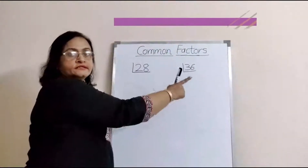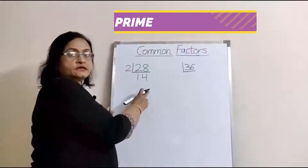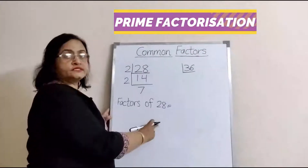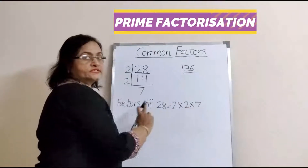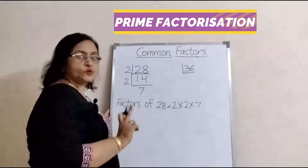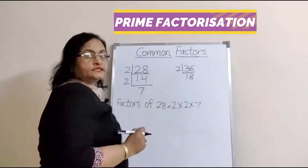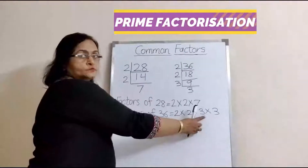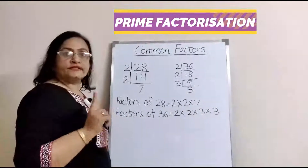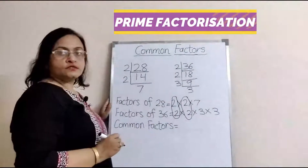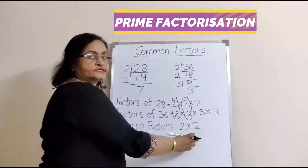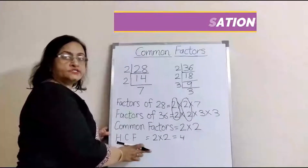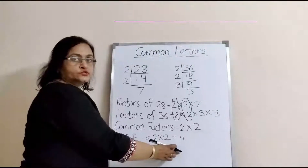Now we will find the HCF of 28 and 36 using the third method. For 28: 2 × 14, then 14 = 2 × 7. So factors of 28 are 2 × 2 × 7. For 36: 2 × 18, 18 = 2 × 9, 9 = 3 × 3. So factors of 36 are 2 × 2 × 3 × 3. The common factors are 2 and 2. So the highest common factor is 2 × 2 = 4.